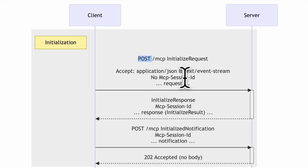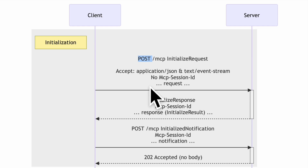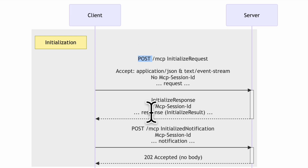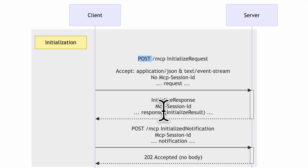This initialization request does not specify an MCP session ID — that will be generated by the server. It's an optional ID, but in this full sequence diagram we'll assume the server does create one, since that enables session management. An initialized request is included in the POST body. The server responds with an initialized response and provides a unique MCP session ID.